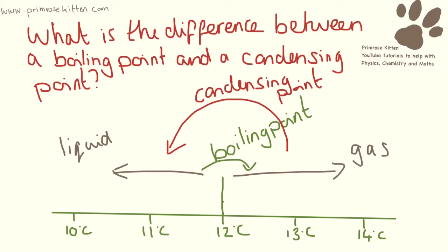It turns from a liquid to a gas — it boils at 12 degrees. And it turns from a gas to a liquid — it condenses at 12 degrees. Now this is confusing because you think two things are happening at once. But generally, only one thing is going to be happening, because we are either going to be heating something up and boiling it, or cooling something down and condensing it. Both things happen at the same point, so there is no difference between a boiling point and a condensing point.